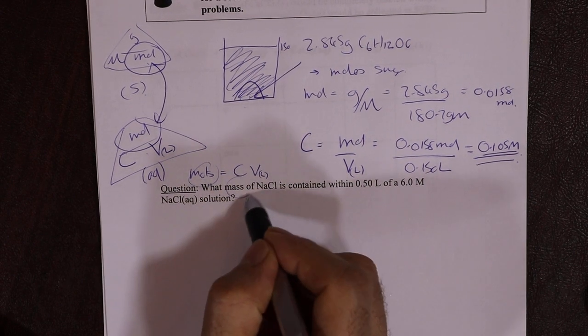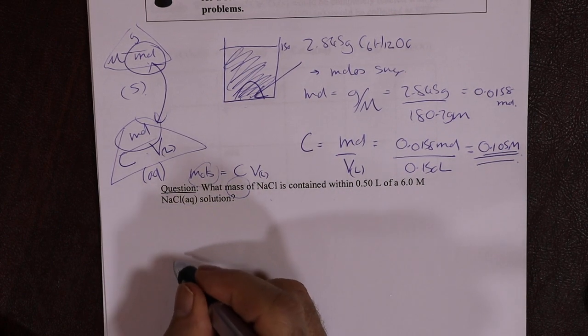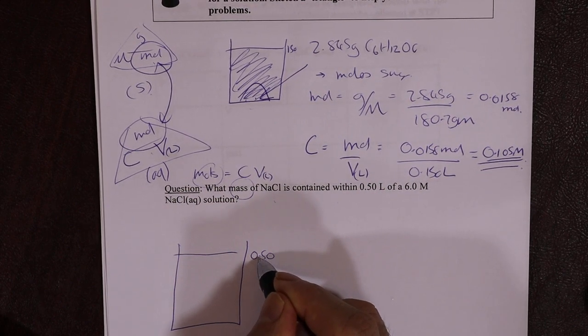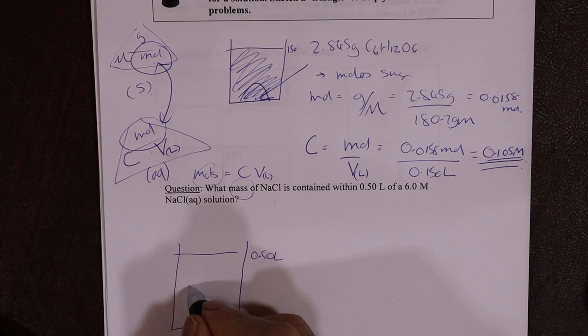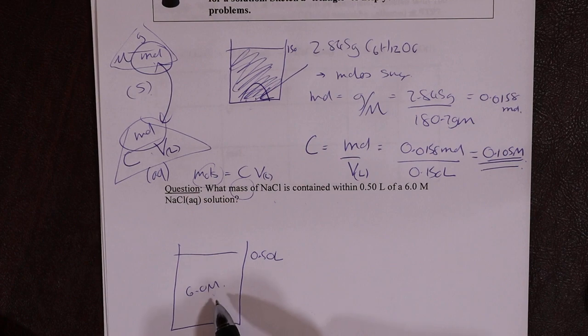So what mass of NaCl is contained within a certain strength and volume solution? So we have a beaker, and it's 0.50 liters. And it has a strength of 6.0 moles per liter strength. So that means, you know, M means moles per liter strength, right? So 6.0 moles per liter strength in LK or concentration.